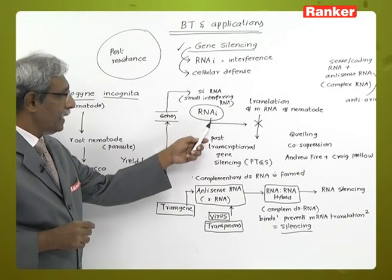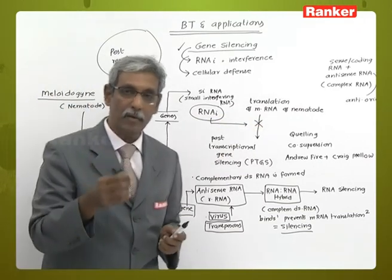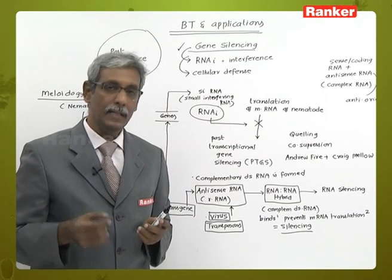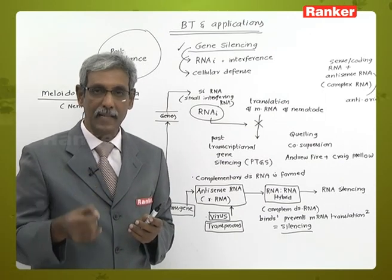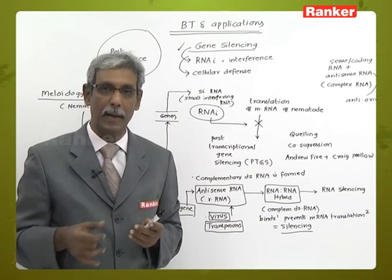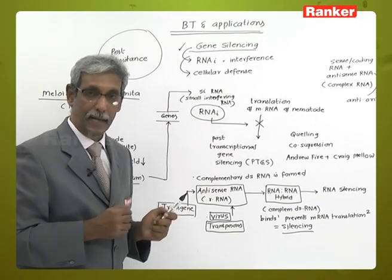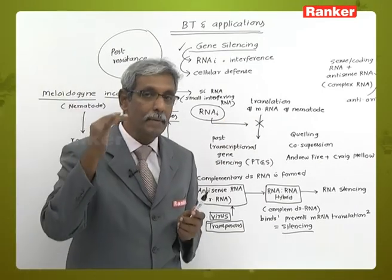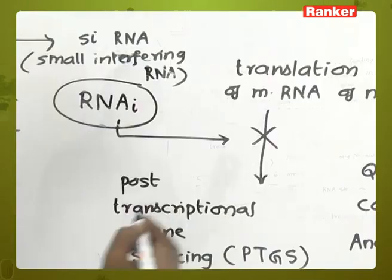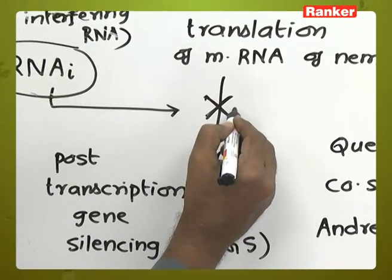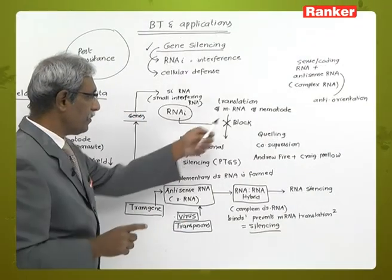When tobacco is infected by the nematode, the nematode's gene makes RNA, then proteins and enzymes, causing toxicity in the tobacco. RNAi can interfere with and block the translation of that mRNA. To clarify: transcription is DNA making RNA, and translation is RNA making proteins.